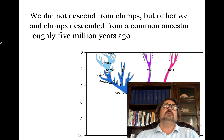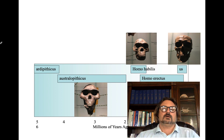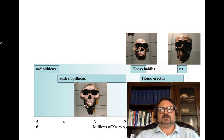We did not descend from chimps, but rather we and chimps descended from a common ancestor roughly five million years ago. Our ancestors include the Ardipithecus, Australopithecus, Homo habilis, Homo erectus, and then finally us. We're going to talk about this in a lot more detail when we discuss hominids.